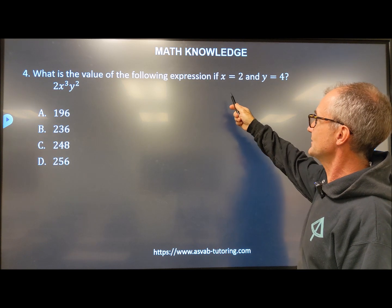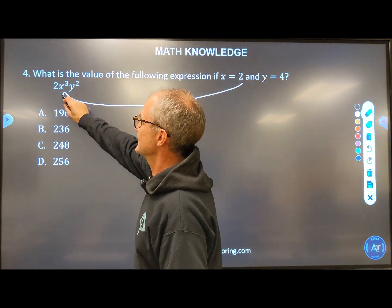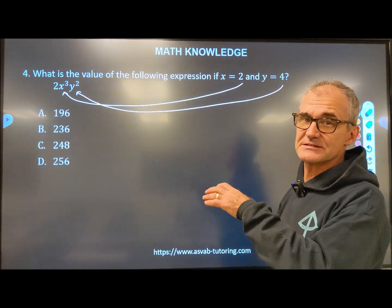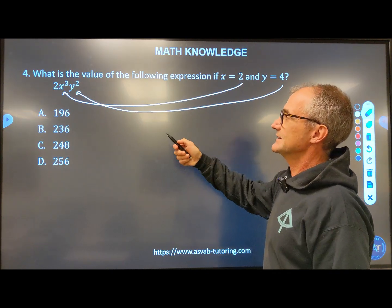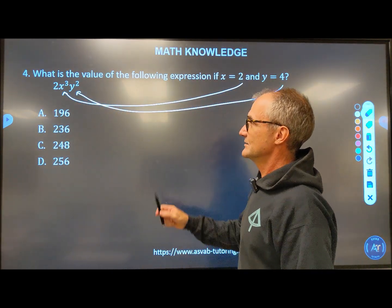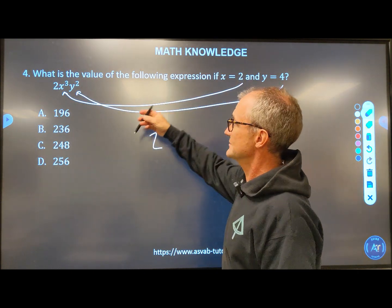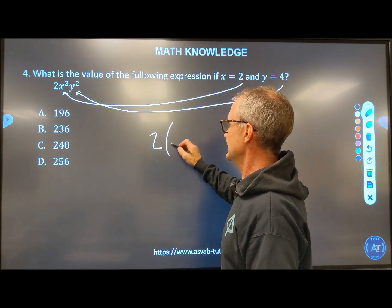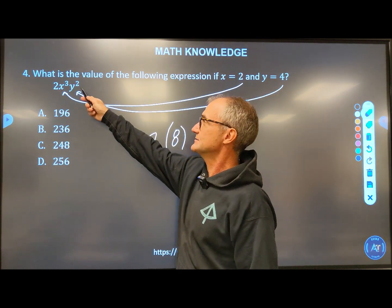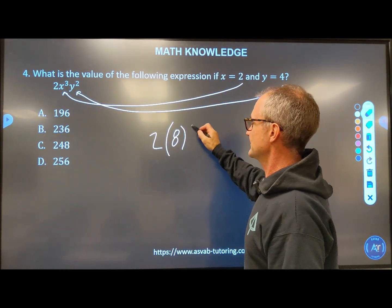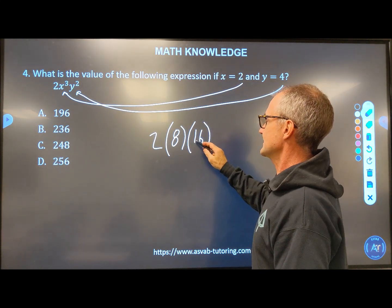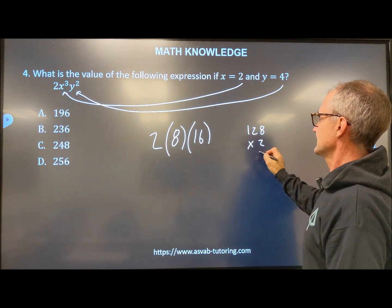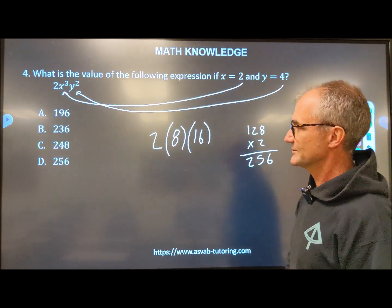Number four, what is the value of the following expression if X equals two? So again, we're going to set that in there. And Y is equal to four. We're going to plug that in there. So we're evaluating the expression, giving values of X and Y, and we're combining the idea of exponents in there as well. So I have that two out front, then I have this two plugged in here. Two to the third power is two times two times two, that's eight. I'm going to take that Y and plug it in right here and square it. Four squared is four times itself for 16. 16 times eight is 128 times two is 256. So my answer is answer D.